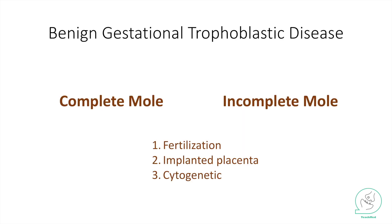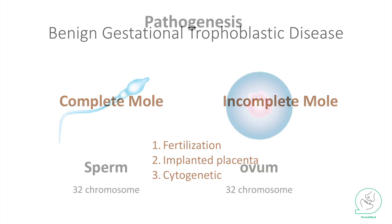We have two types of molar pregnancy: it's either complete mole or incomplete mole. To make it easy, I will take you through three stages — first fertilization, next placenta, and lastly cytogenetics.